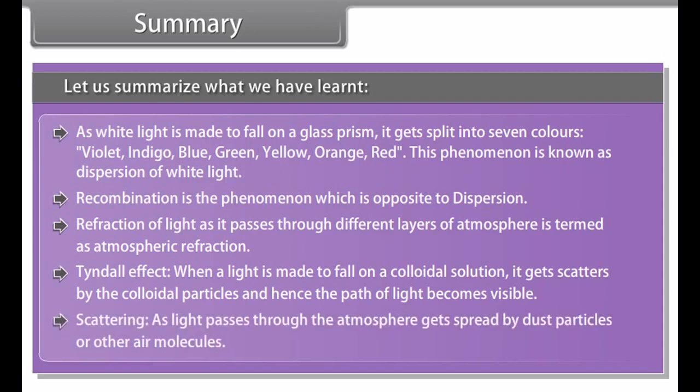A prism is a solid figure having two triangular bases and three rectangular surfaces. Angle between each surface is known as the angle of prism. As white light is made to fall on a glass prism, it gets split into seven colors: Violet, indigo, blue, green, yellow, orange, red. This phenomenon is known as dispersion of white light.